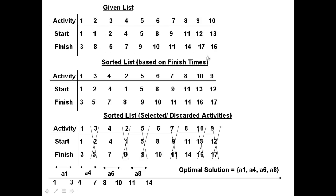These are called the start and finish times of those activities. Now what you want to do is pick the largest possible set of activities such that they are not overlapping with each other. For example, these four activities do not overlap: activity one starts at time one and finishes at time three, activity four starts at time four and finishes at time seven - there is no overlap.